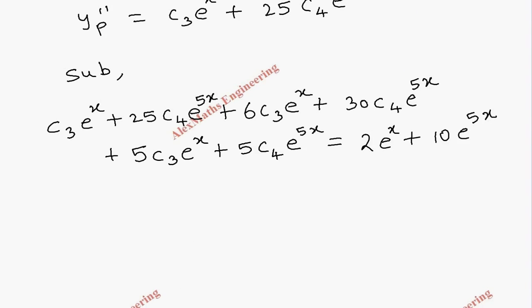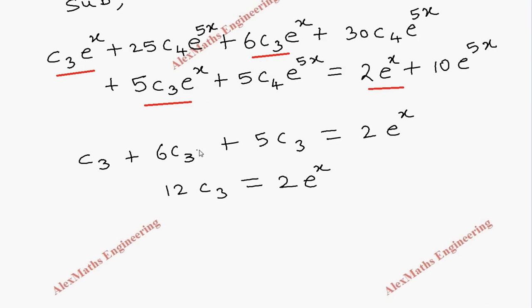Now, comparing the coefficients of e power x on both the sides. So, here e power x, here e power x, here e power x term we have. And, on the other side, we have e power x. So, this will become c3 plus 6c3 plus 5c3 equal to 2. By comparison, we are equating the coefficients of e power x. So, let's write only 2. Then, by comparison, we get the value of c3 as 2 by 12, which is 1 by 6.